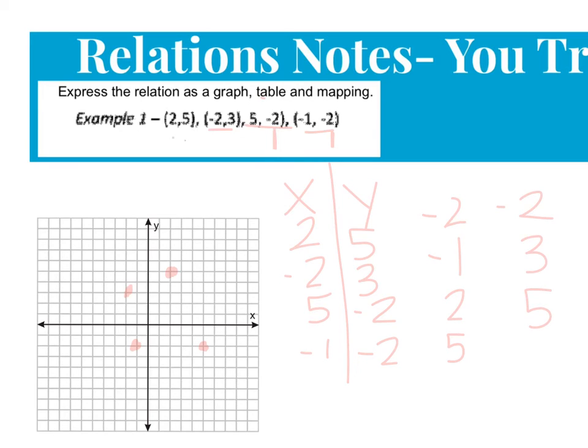All right, so my first point, 2, 5, 2 connects with 5. And I've got negative 2, 3, so that's going to pair up. I've got 5, negative 2, that's going to connect to negative 2. And I've got negative 1, negative 2, that's also going to connect to negative 2.